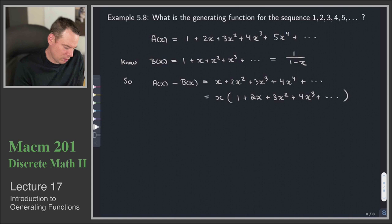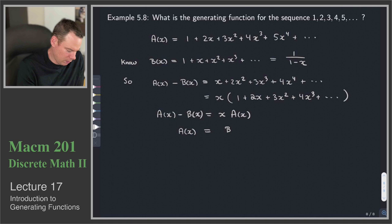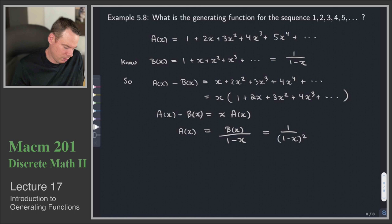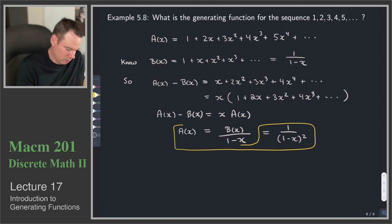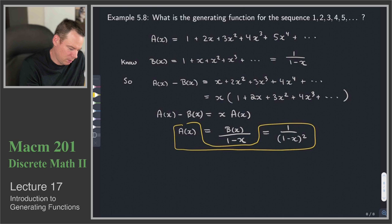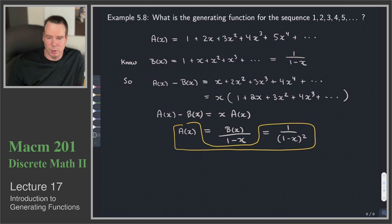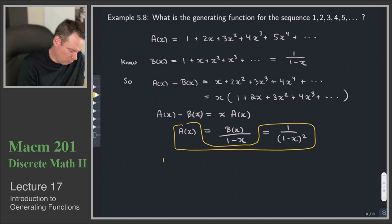So a(x) − b(x) = x·a(x), which gives a(x) = b(x)/(1-x) = (1/(1-x)) · 1/(1-x) = 1/(1-x)². Therefore 1/(1-x)² is the generating function for the sequence of consecutive integers 1, 2, 3, 4, …